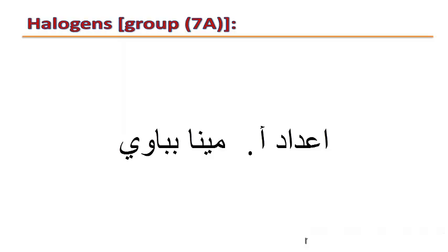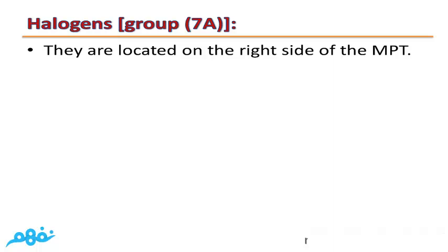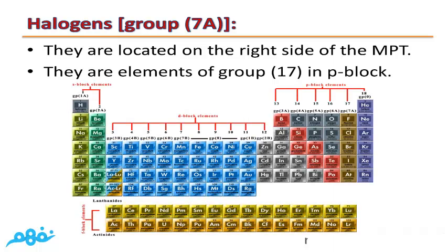Group 7A Halogens are located on the right side of the modern periodic table. They are elements of group 17, which are located in the P block.